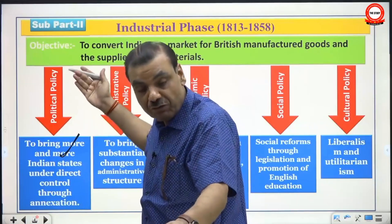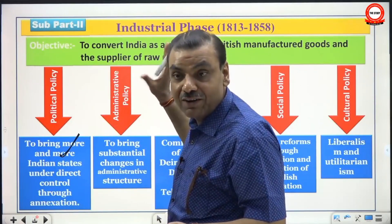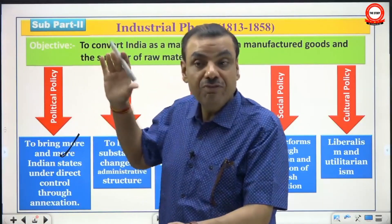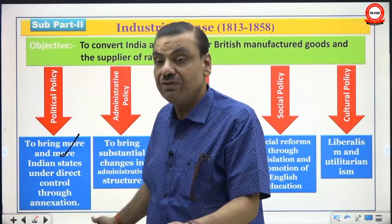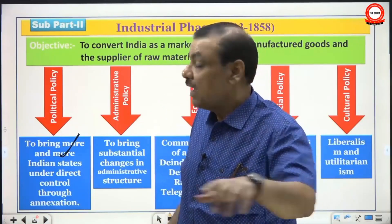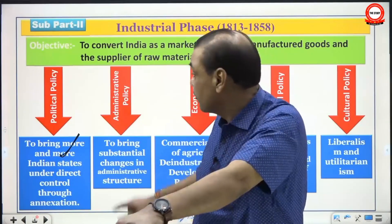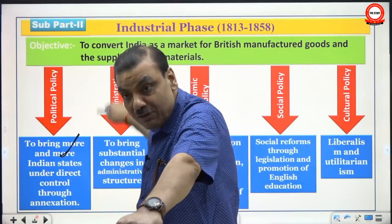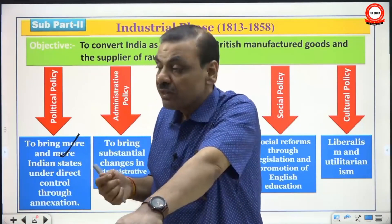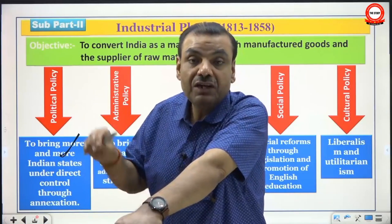Marx divided the phases of colonialism into two parts: monopoly capitalism and free trade. In Marxian terms, monopoly capitalism corresponds to the mercantile phase, and the free trade phase is what Marx applied to this era. However, Rajni Palme Dutt changed the nomenclature to mercantile, industrial, and financial phases. Rajni Palme Dutt was an Indian Marxist who followed Lenin.